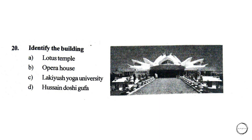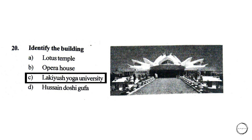Moving on, identify the building in the image below. Options are: A) Lotus Temple, B) Opera House, C) Lakeish Yoga University, D) Hujan Doshi Gufa. The right answer is option C, Lakeish Yoga University.